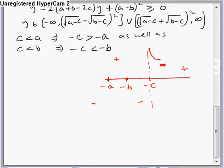We don't need to plot the graph. We just need to see that this value is the minimum value we need to figure out. And minimum value here is this value, which is root of a minus c plus root of b minus c whole square.